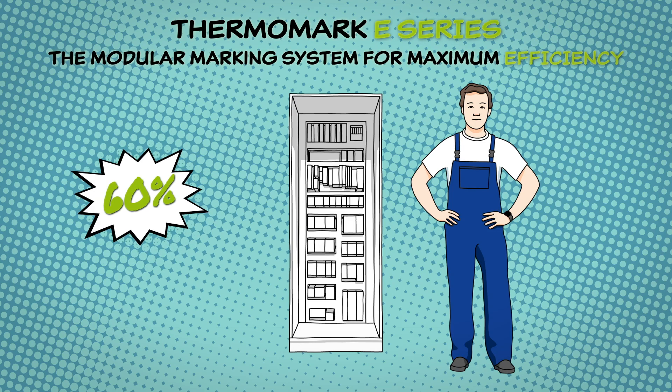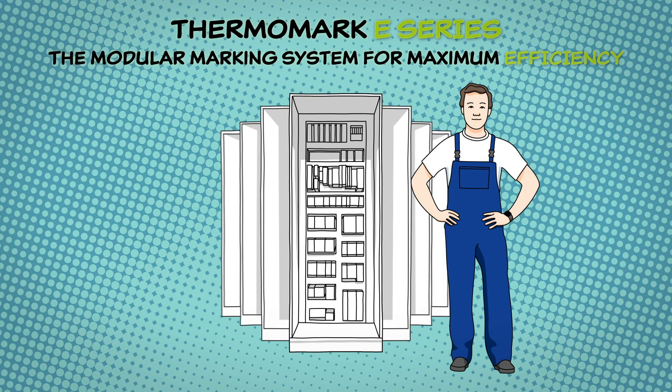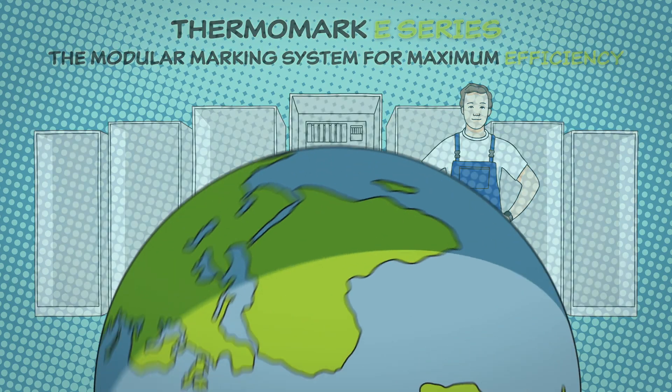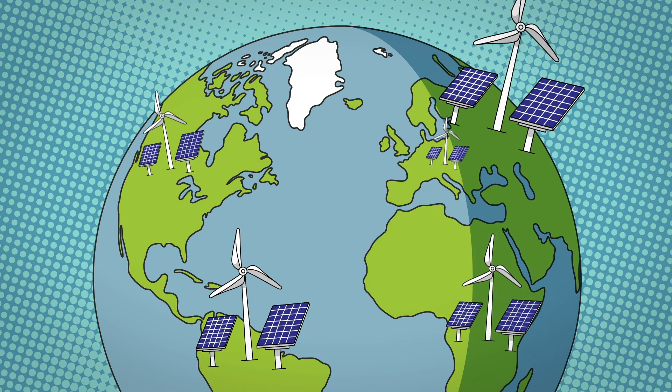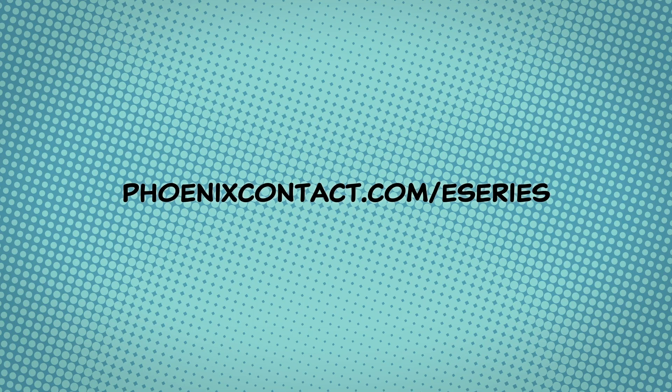This is important when dealing with the growing demand for control cabinets, such as those needed for the expansion of renewable energy. Find out more about the advantages of automated industrial identification at phoenixcontact.com/e-series.